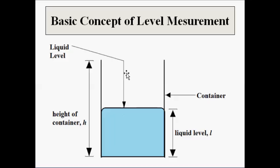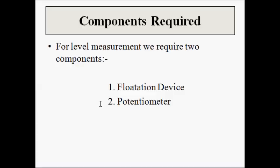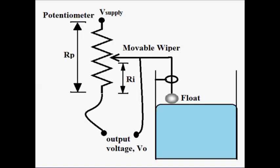The liquid level will either increase or decrease in a straight line path, so we need a linear potentiometer. The components required for implementing this level measurement are a floatation device — simply a float — and a linear potentiometer. The float is kept on the liquid level and floats freely on the surface. It is connected to the wiper or movable arm of the linear potentiometer with the help of an insulated wire.